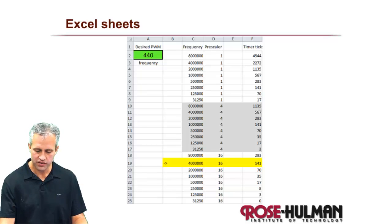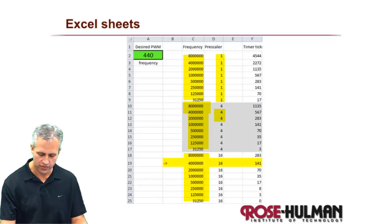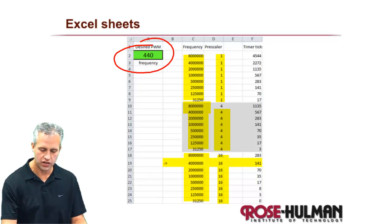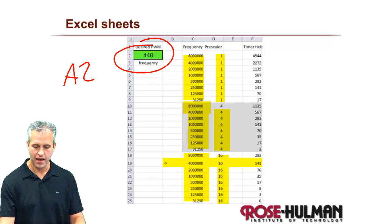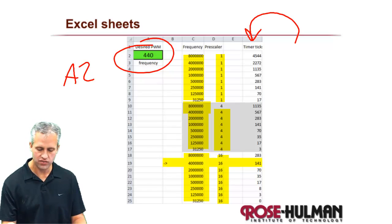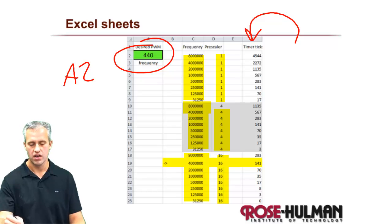But you can make an Excel spreadsheet that lists all the different combinations. So here's the combinations for the different clock speeds, and then each one is with the different pre-scaler. And the way I've got mine set up is I've got an Excel sheet here, which is just A2, and then it does the math. And it has the answer for timer ticks, for all these different combinations.